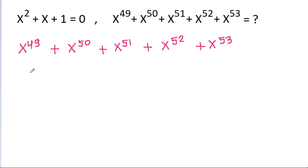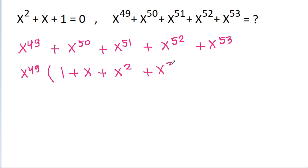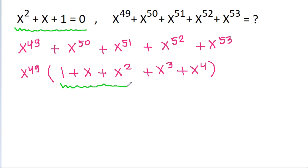If we take x power 49 common, then we get x power 49 times 1 plus x plus x squared plus x cubed plus x power 4. And we have x squared plus x plus 1 is equal to 0, so this group is equal to 0.